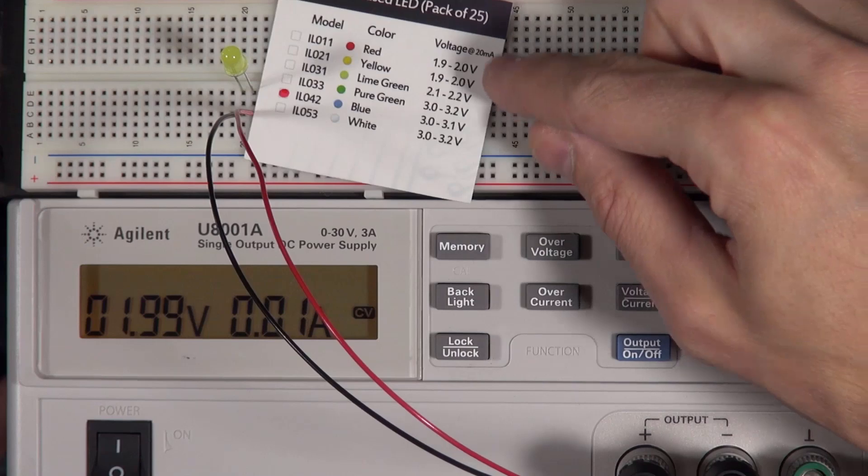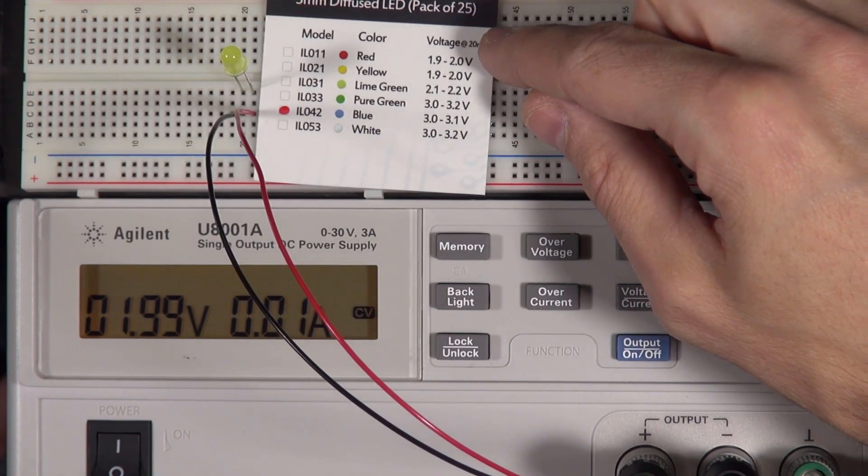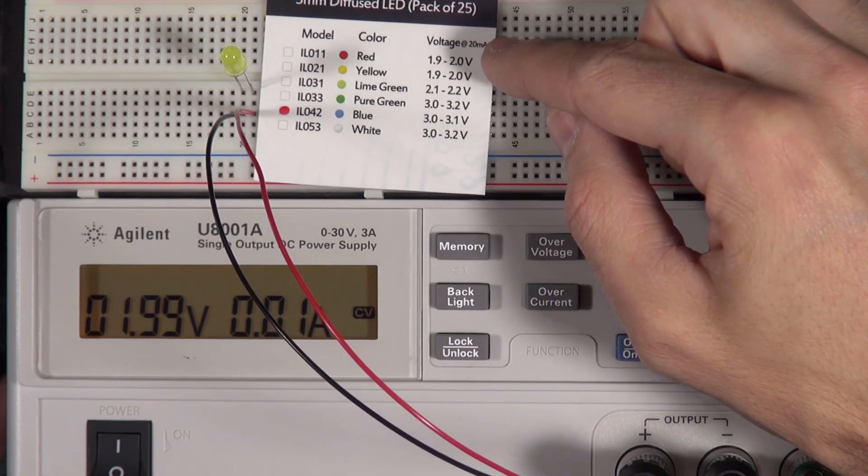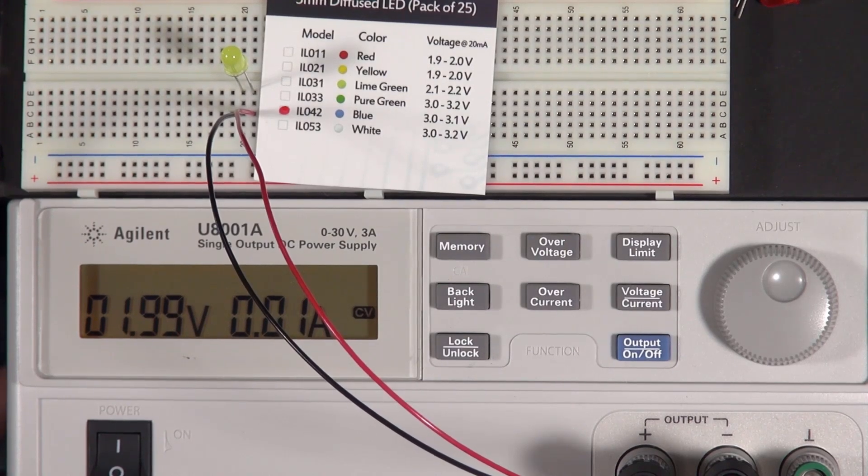And the reason for that is that when we increase the voltage beyond the 1.9 to 2 volts that it wanted, the LED started drawing a ton of current. And of course, since power is voltage times current, it started drawing a ton of power. And it had to dissipate that power somewhere, and it dissipated that power into heat. And it basically burned itself up.